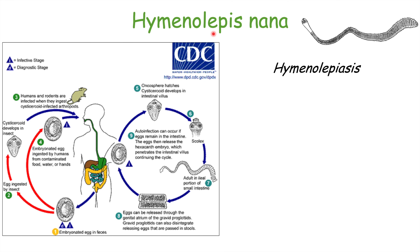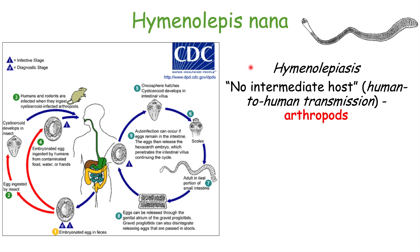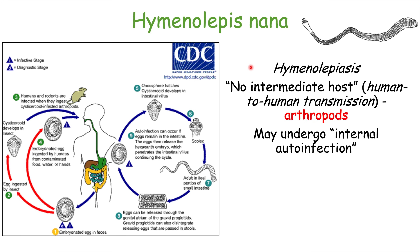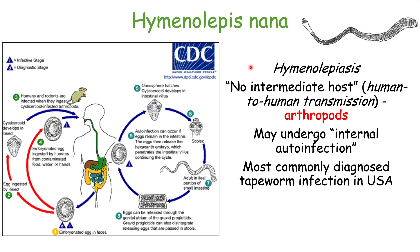Infection with Hymenolepis nana leads to the condition known as hymenolepiasis. This tapeworm is often considered not to have an intermediate host because it can be passed human to human, though arthropods could be considered an intermediate host. It can undergo internal auto-infection, and it is the most commonly diagnosed tapeworm infection in the USA.